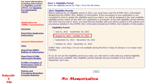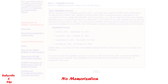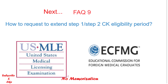Your eligibility period will also be mentioned on your schedule permit. If you cannot appear in the exam during your assigned period, you may request an eligibility period extension. In the next video, we will learn how to request an extension of the eligibility period.